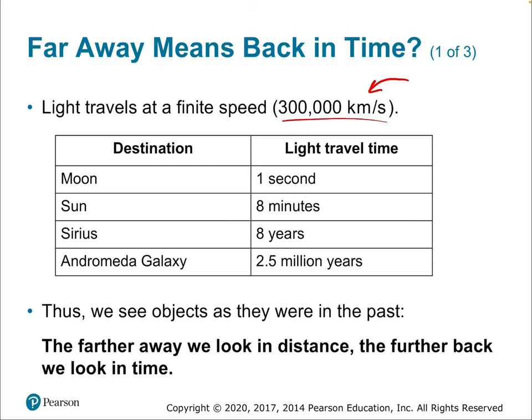How long does light take to travel known distances? Light travels from the Moon to Earth in about one second, because the average Moon-Earth distance is about 300,000 kilometers. Light takes about eight minutes to travel from the Sun to us, which means we're always looking back in time by eight minutes every time we glance at the sun.